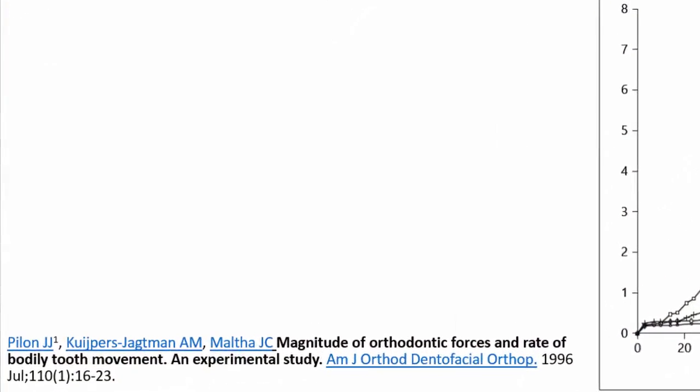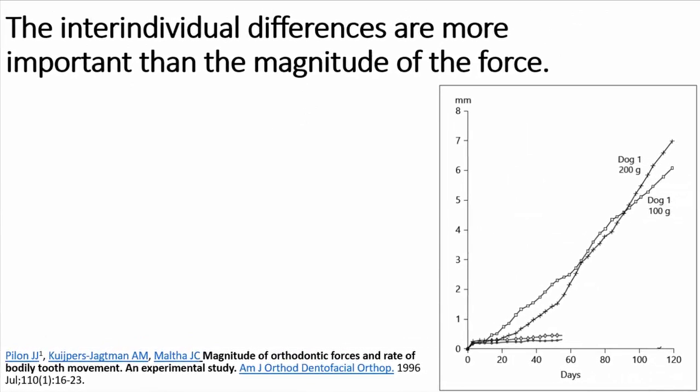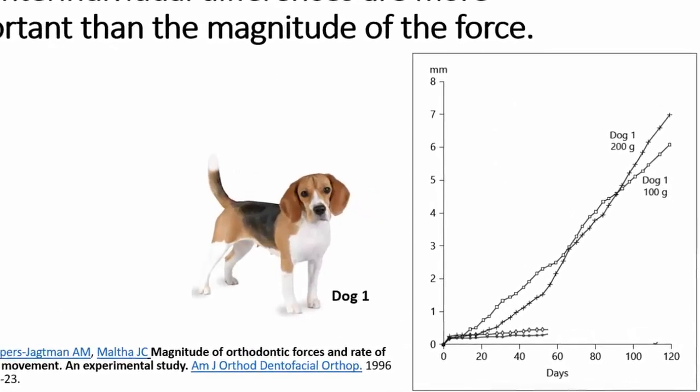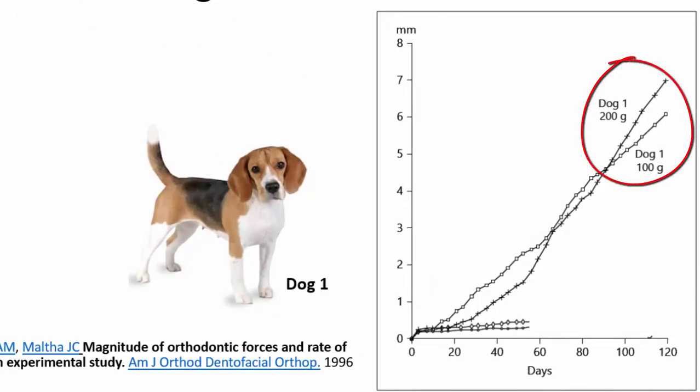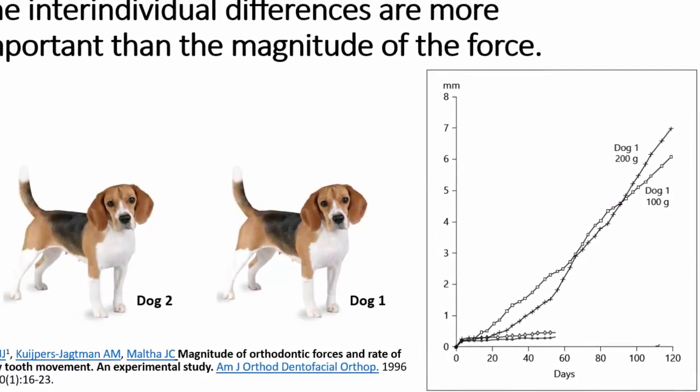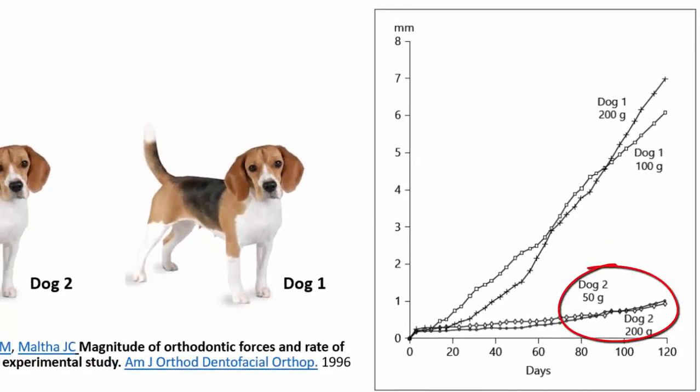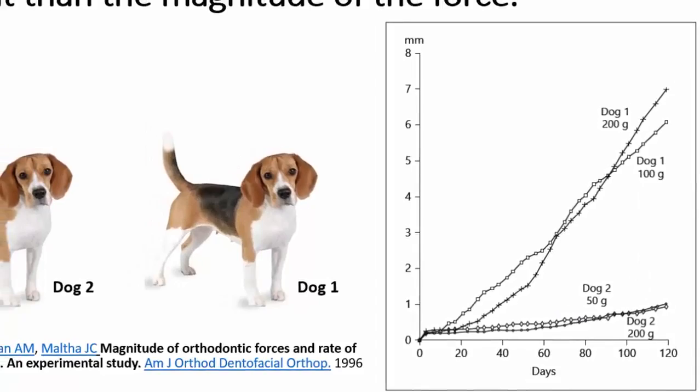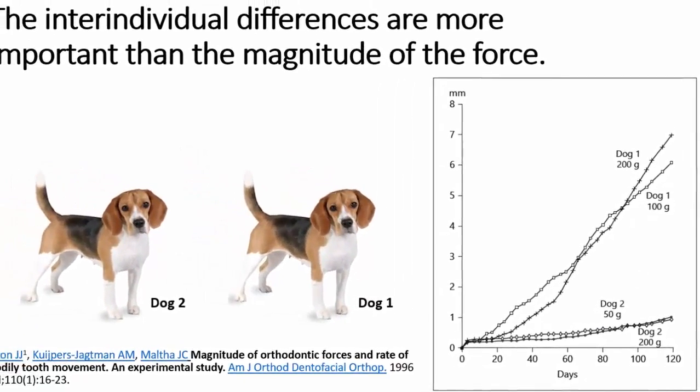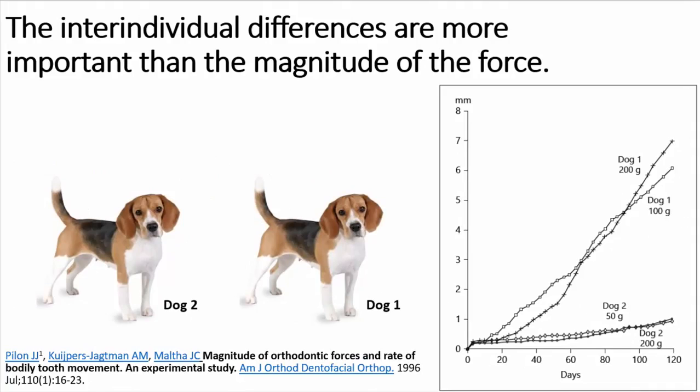Take, for example, this classic study on dogs. This research evaluated the influence of several magnitudes of force on the amount of dental movement. Notice in dog 1, for example, that doubling the force did not change the amount of movement obtained. Something similar occurred in dog 2, in which the tooth movement obtained was the same even with the force being increased four times. Also notice in this graphic the enormous difference of movement observed between dogs 1 and 2, independently of the intensity of the applied force. That is, the individual variability in the application of force was much more relevant than the magnitude of these forces.